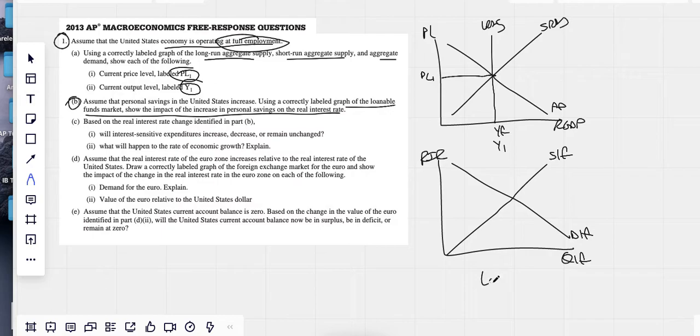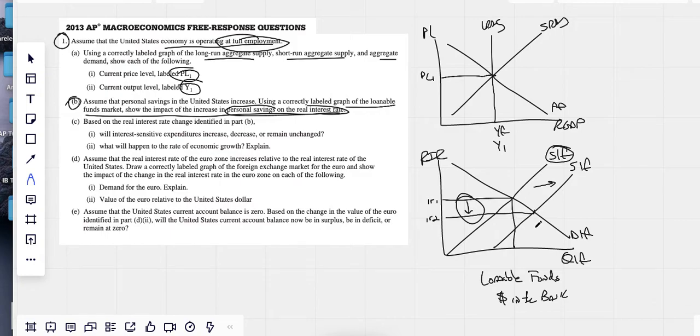Your loanable funds graph should just be thought of as money in the banks. And that's exactly how I talk and teach it. It is just money in the banks. So if people are saving more supply, more money going into the banks. So the supply of loanable funds would increase. This would drive down the real interest rate. Let's do IR1, IR2, quantity of loanable funds.